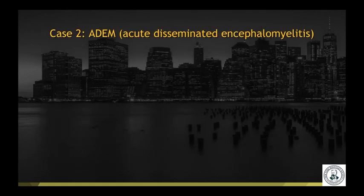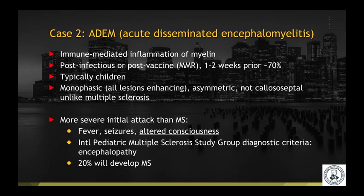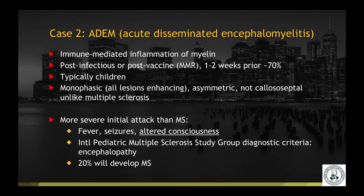These are cases of ADEM, acute disseminated encephalomyelitis. This is an immune-mediated disease of the myelin, often post-infectious or post-vaccine, typically seen in children, although adults can have ADEM. Unlike multiple sclerosis, it tends to be monophasic, with all the lesions enhancing at the same time, and it can often be more asymmetric than MS. The initial attack is much more severe, often with fever, seizures, and altered consciousness. Diagnostic criteria from the International Pediatric Multiple Sclerosis Study Group found encephalopathy to be a key diagnostic criterion, and 20% of these patients will go on to develop multiple sclerosis.